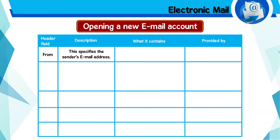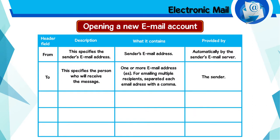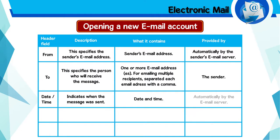The header field 'From' specifies the sender's e-mail address. It contains the sender's e-mail address and is automatically generated by the sender's e-mail server. The header field 'To' specifies the person who will receive the message. It contains one or more e-mail addresses for e-mailing multiple recipients, separated with a comma. The header field 'Date and Time' indicates when the message was sent, and it is automatically provided by the e-mail server.